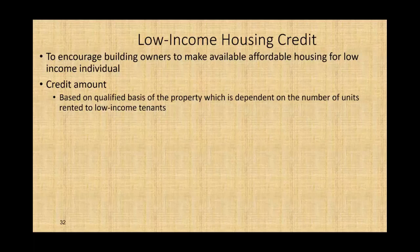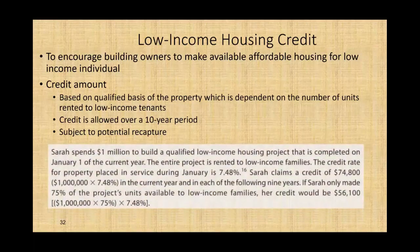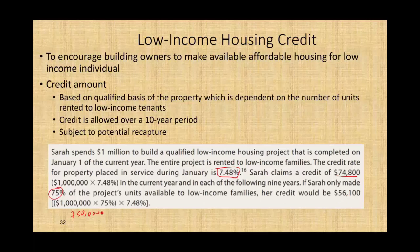If you have 100 units, how many of those are rented to low income? The credit is allowed over a 10-year period and is subject to potential recapture. So if you started as a low income housing project and then change your mind, the credit is recaptured. For example, Sarah spent a million dollars to build a qualified low income housing project completed January 1st. The entire project is rented to low income families. The credit rate for property placed in service during January is 7.48%, so Sarah claims a credit of $74,800 in the current year and in each of the following nine years. If Sarah only made 75% of the project units available to low income, her credit would be $750,000 times the credit rate.